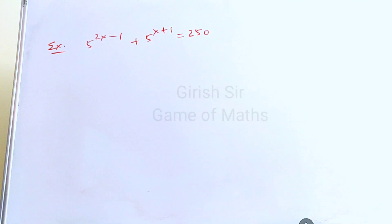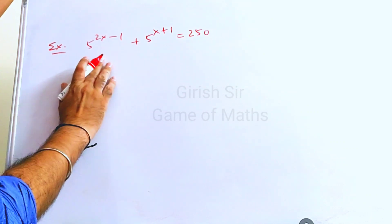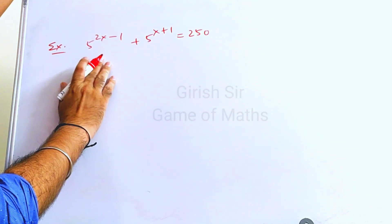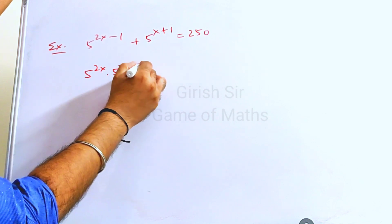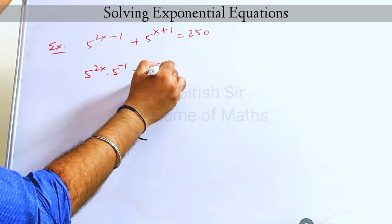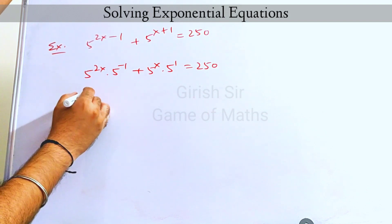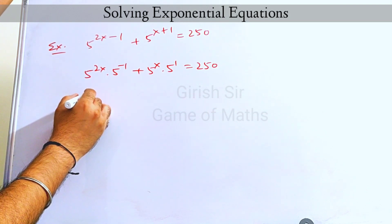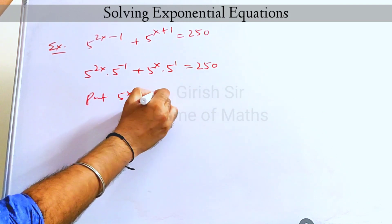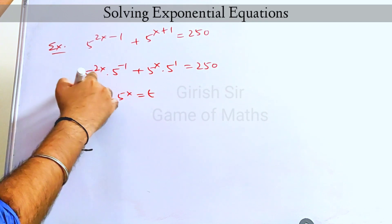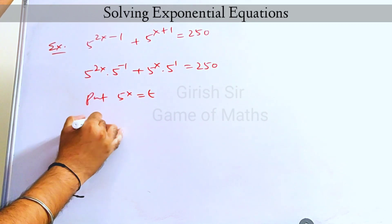We will see another example. In this equation, we can write the left-hand side using the property of exponents. Now if I put 5 raised to x equal to t and make the substitution, this term can be written as t squared.